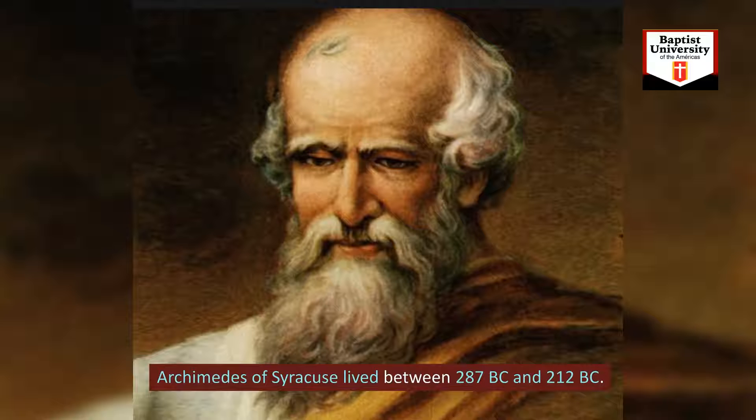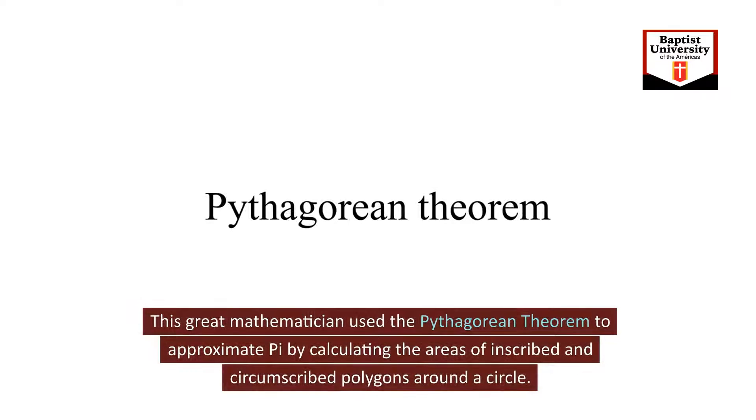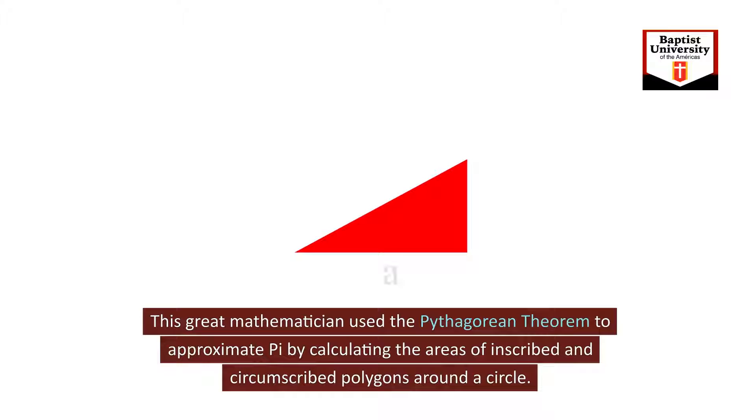Archimedes of Syracuse lived between 287 BC and 212 BC. This great mathematician used the Pythagorean theorem to approximate pi by calculating the areas of inscribed and circumscribed polygons around a circle.